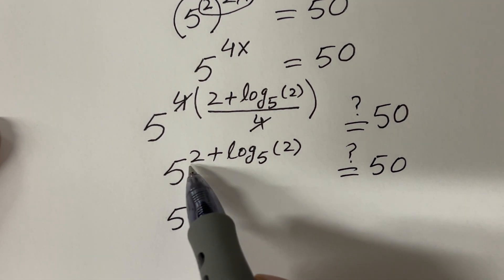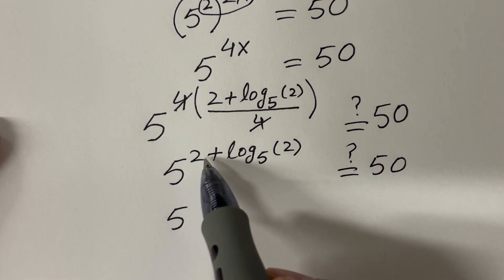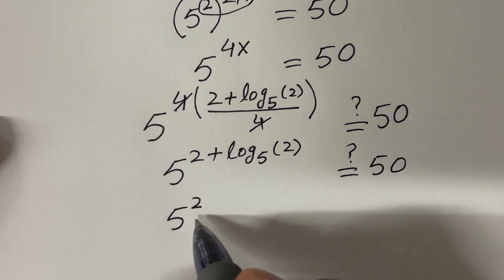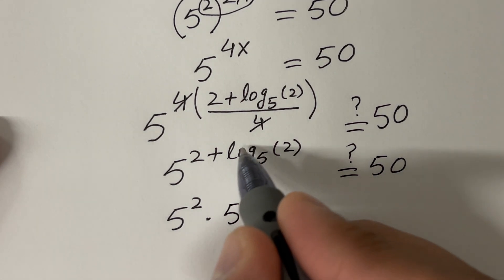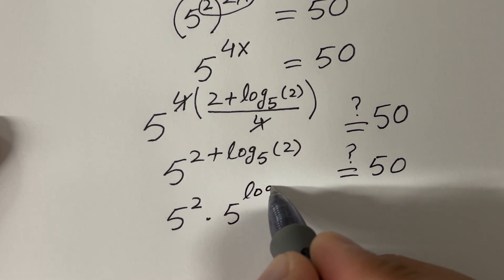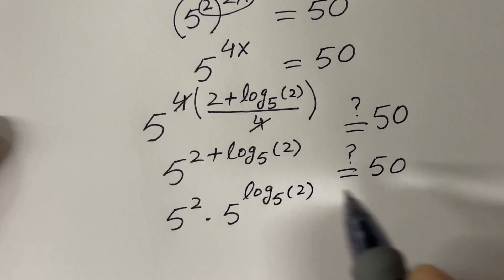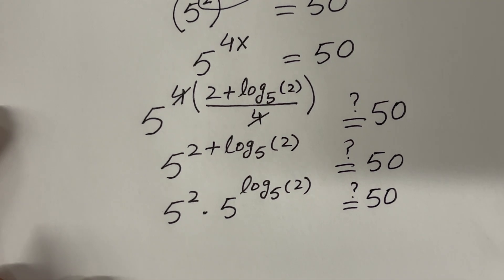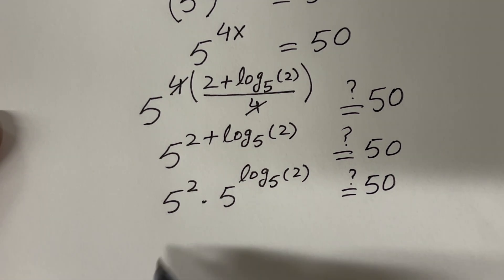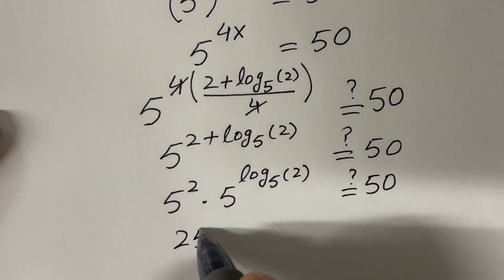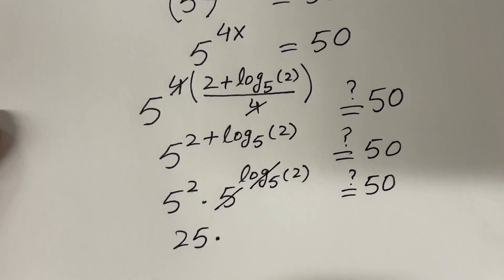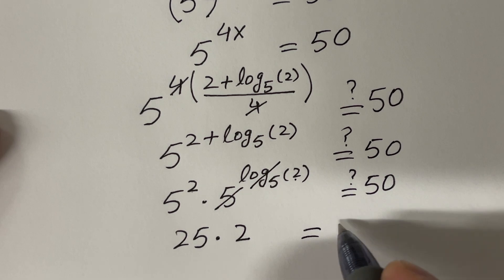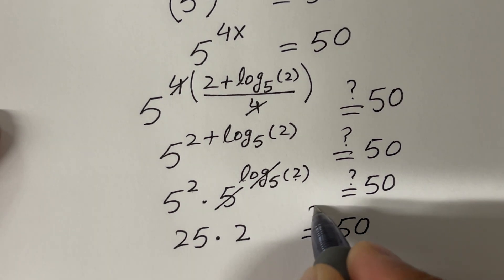If we have 5 raised to the power 2 plus something, that can be written as 5 raised to the power 2, times 5 raised to the power that something — whatever we have here. And we want to see if this is equal to 50 or not. We know that 5 raised to the power 2 is 25, times this guy — and this guy cancels, leaving us with only 2.